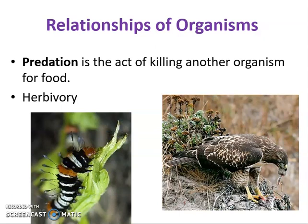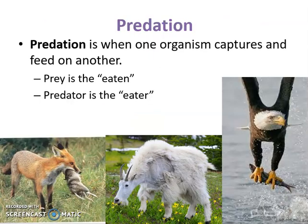Predation is the act of killing or consuming another organism for food. This doesn't always have to be blood, guts, and gore — it can also be called herbivory, where something like a caterpillar or insect will browse on part of a plant but doesn't kill it completely, allowing it to reestablish itself. A quick recap: prey is the one that gets eaten — the rabbit, the grass, the fish — and the predator is what does the eating — the red fox, the bald eagle, and the sheep in these cases. Some of our top predators are very important in population control.